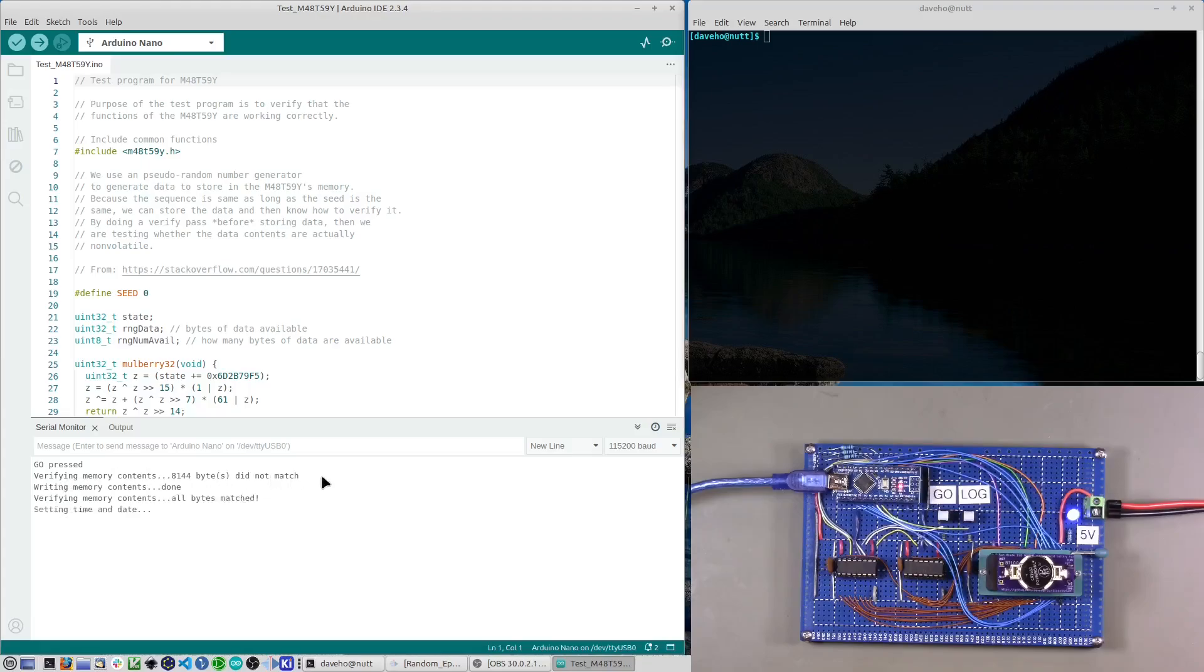The initial verify phase didn't match, and that's expected because there were different contents in here. But then after writing the pseudo-random sequence and verifying again, now the verification succeeds. So the data is there. And then this is the real-time clock test. It does test that you can set a date and time, and it also tests to make sure that the seconds are counting up at more or less the right rate.